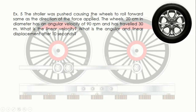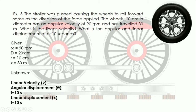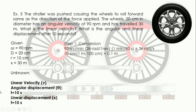Example 5: the wheels. The stroller was pushed, causing the wheels to roll forward in the same direction as the applied force. The wheels are 20 cm in diameter, giving a radius of 10 cm, with an angular velocity of 90 revolutions per minute, and have traveled 30 meters. We need to find: (A) linear velocity, and (B) angular displacement and linear displacement at t = 10 seconds.